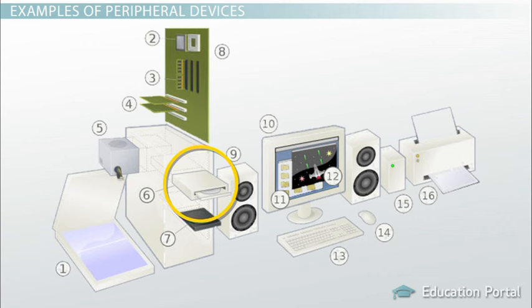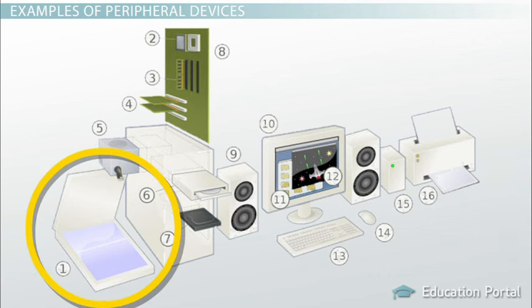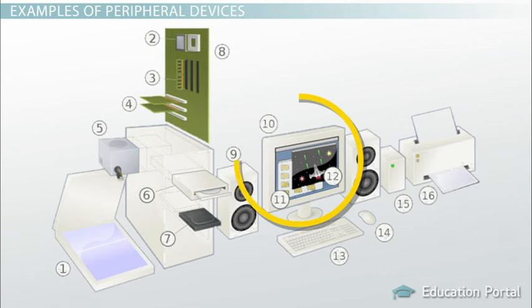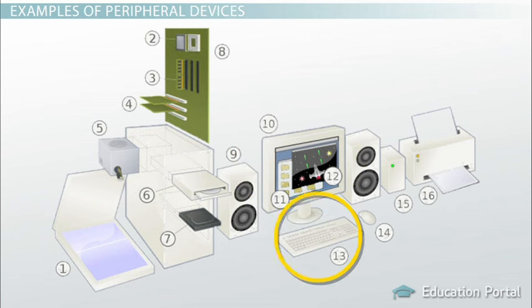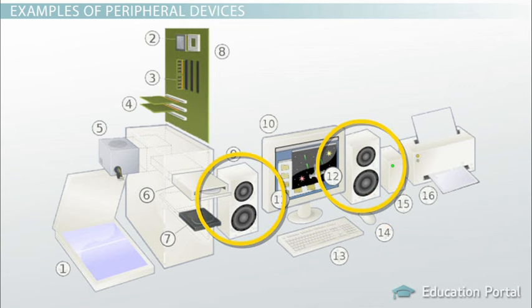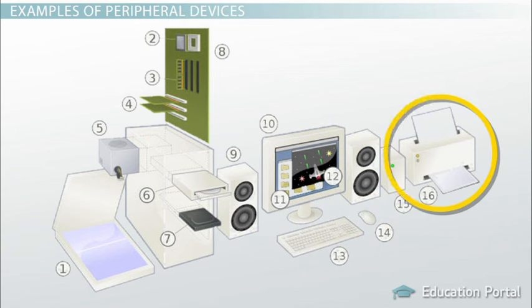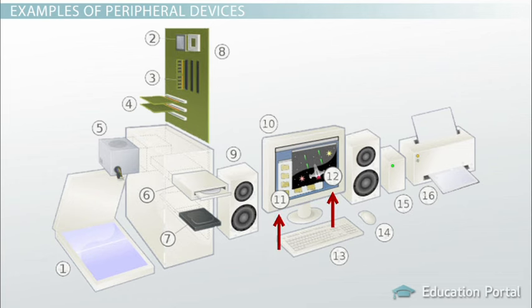External input peripherals are a scanner (number 1), display monitor (number 10), keyboard (number 13), and mouse (number 14). External output peripherals are a set of speakers (number 9) and a printer (number 16). Note that labels 11 and 12 in the figure refer to software and are not peripherals.